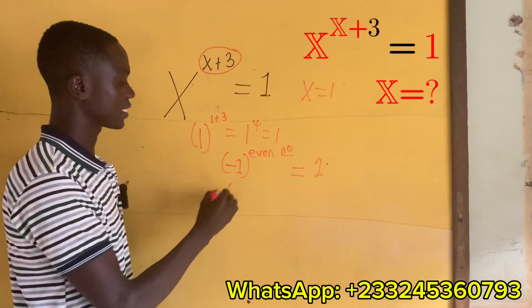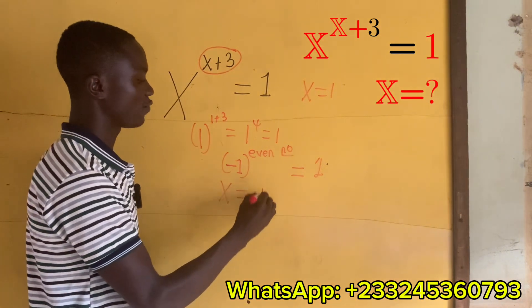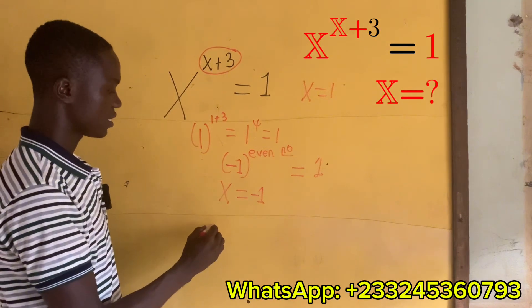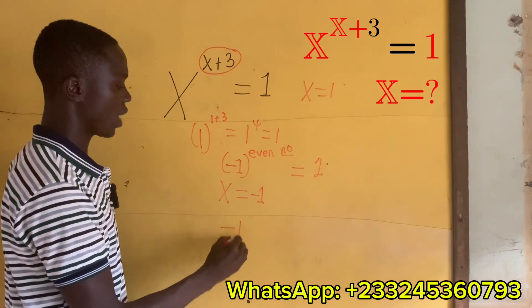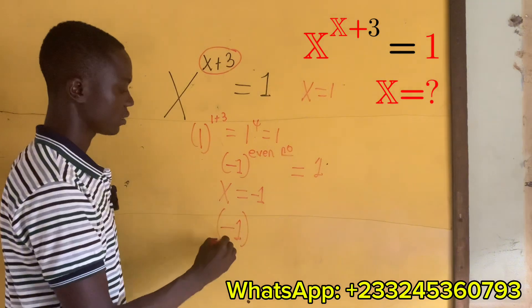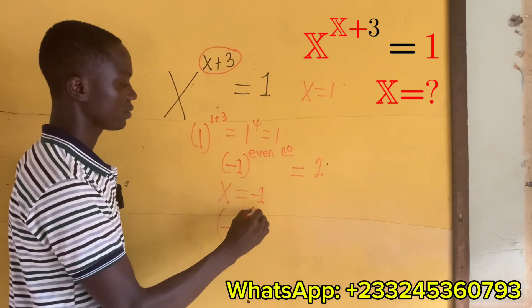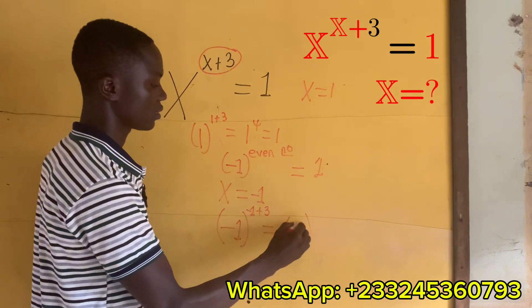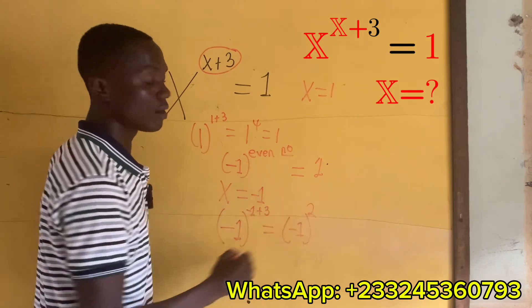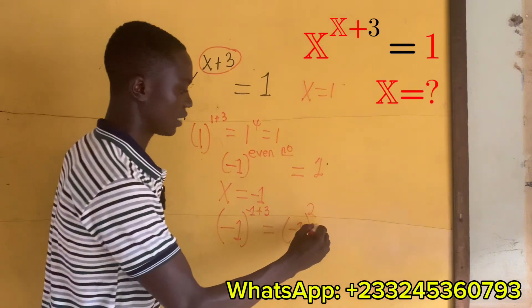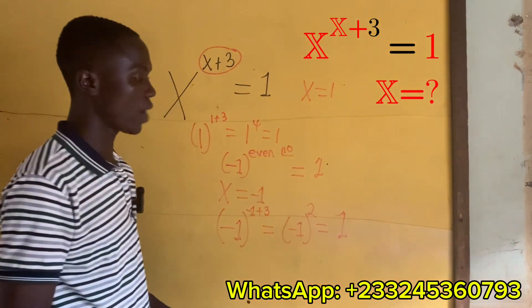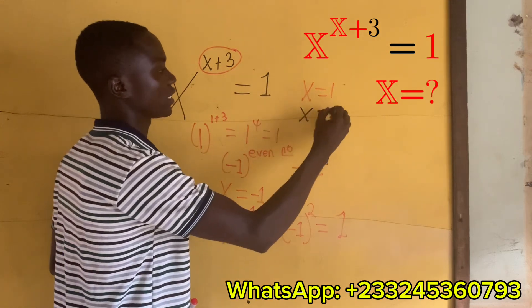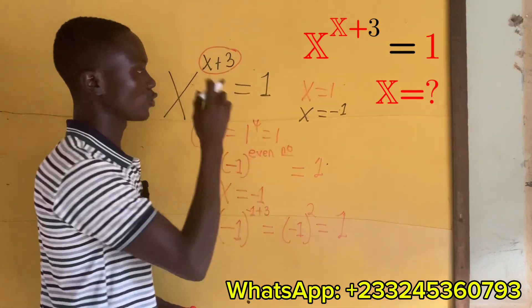If I take x to be equal to negative 1, let's see if it all fits. Then you're gonna have negative 1 exponent negative 1 plus 3, that is negative 1 exponent positive 2, and this gives me positive 1. So x equals negative 1 is also a solution for this exponential equation.